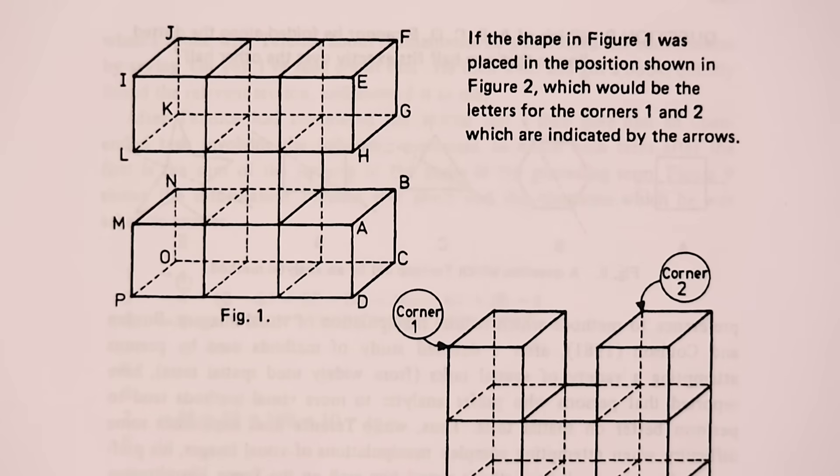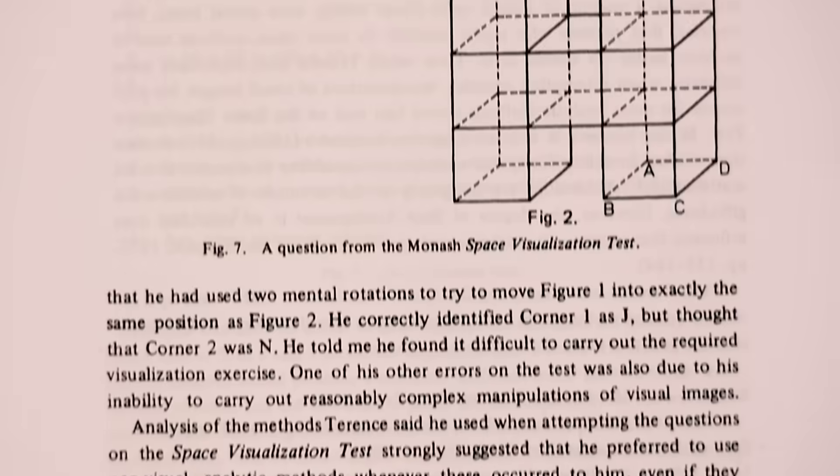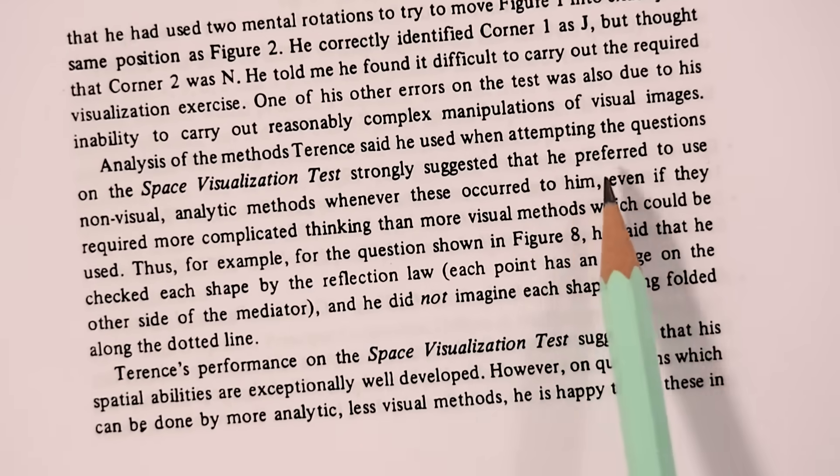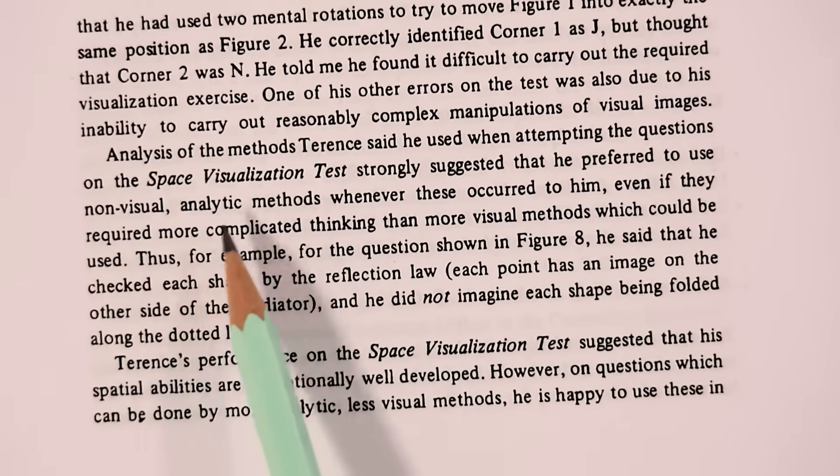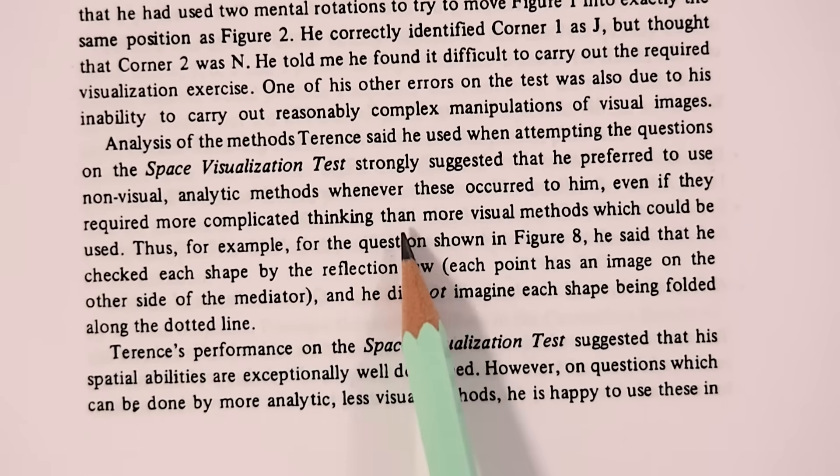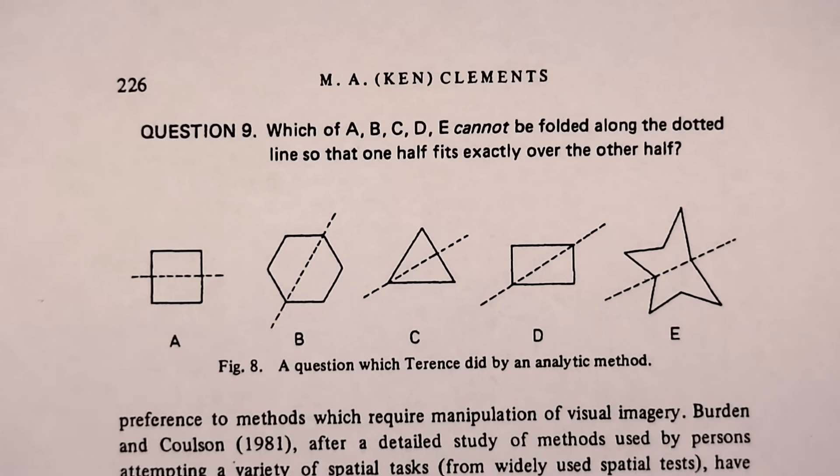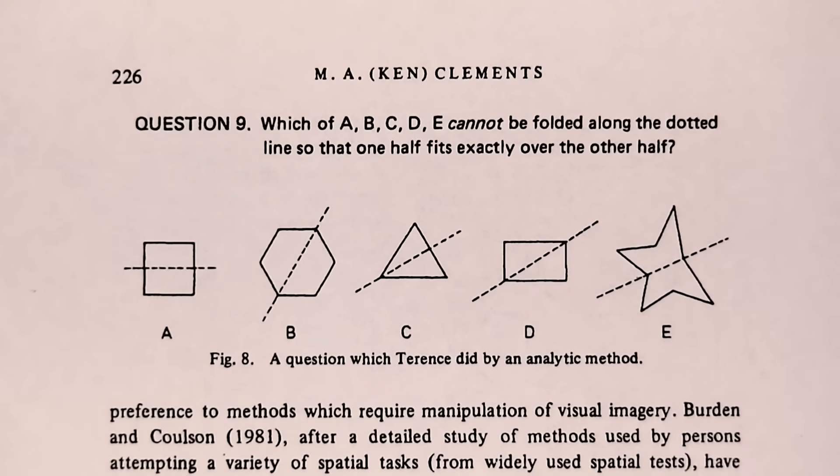He was given a space visualization test, which again made Clements come to the conclusion that Terence preferred to use non-visual analytic methods, even if they required more complicated thinking than more visual methods. For example, with this question here, Terence said that he checked each shape by the reflection law, which was that each point had an image on the other side of the mediator. And he did not imagine each shape being folded along the dotted line.